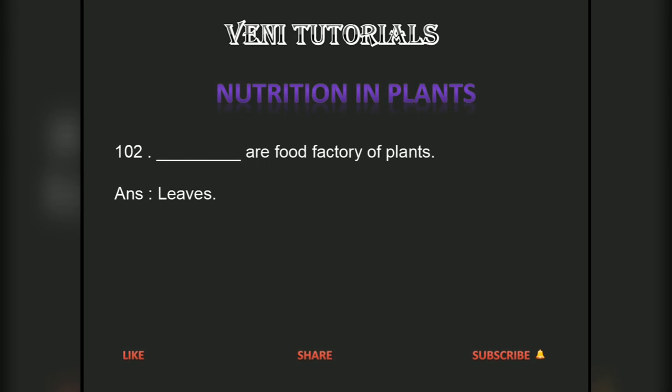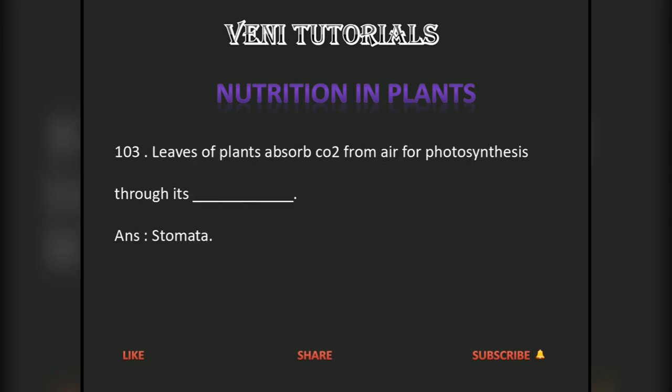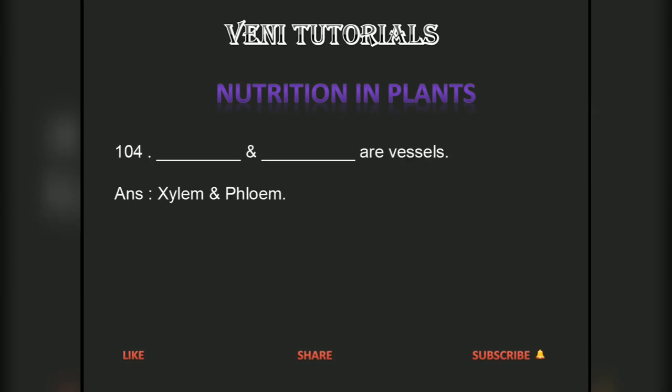Dash is the food factory of plants. Answer: Leaves. Leaves absorb CO2 from air for photosynthesis through their Dash. Answer: Stomata.